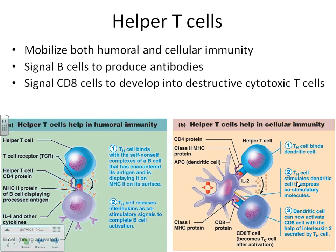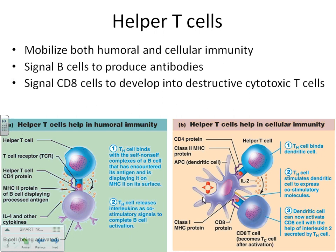Let's look at what the helper T cell does first. Since it's called a helper T cell, it helps everything else. The helper T cell's main job in your body is to give permission.